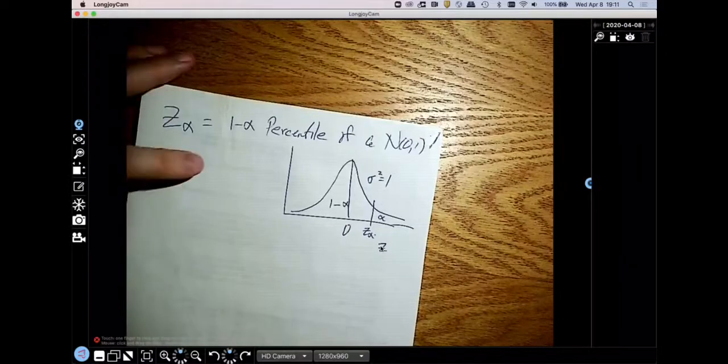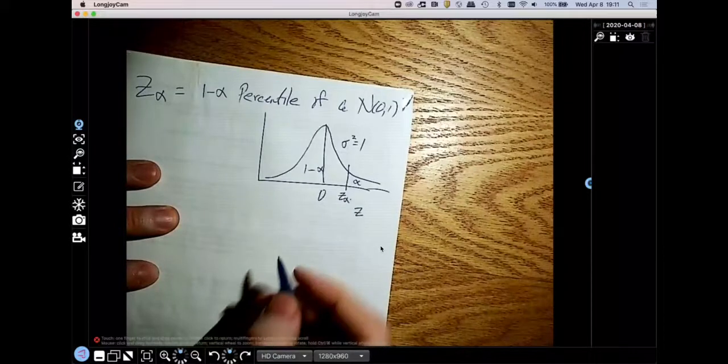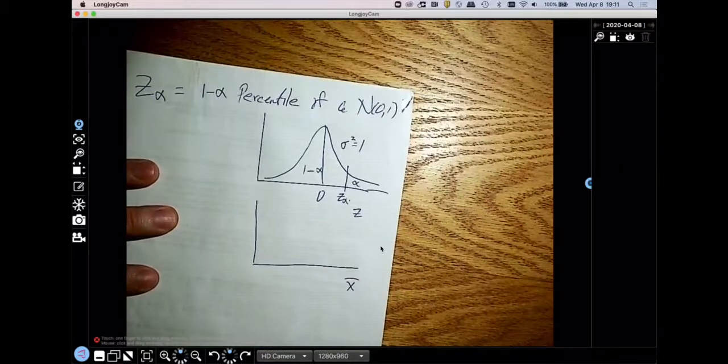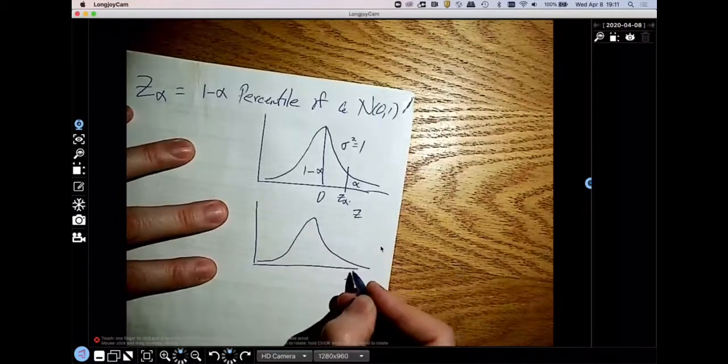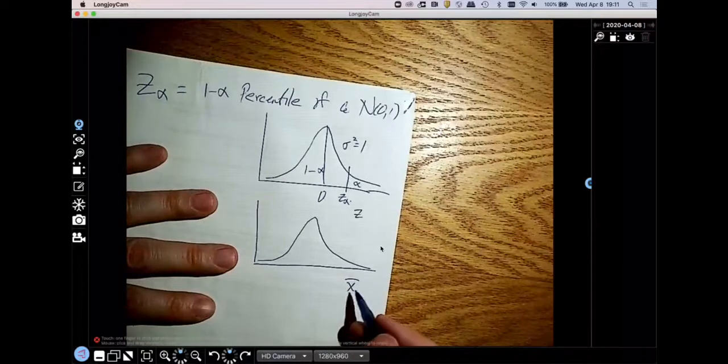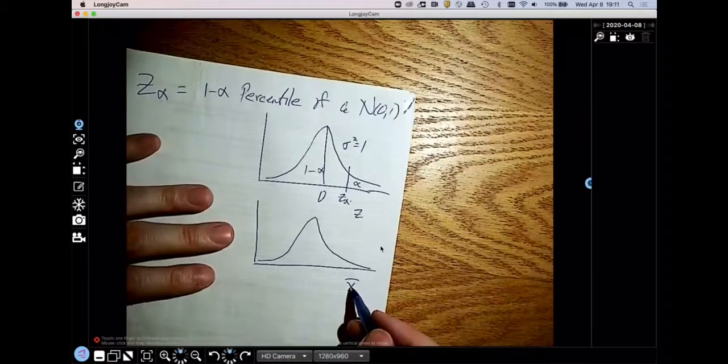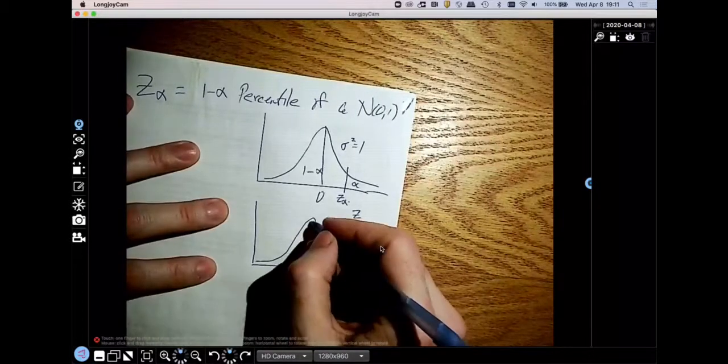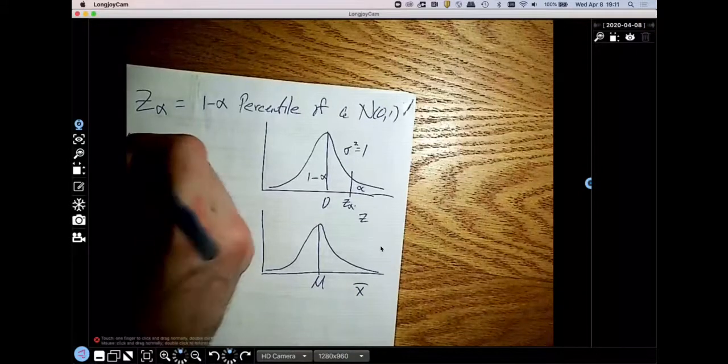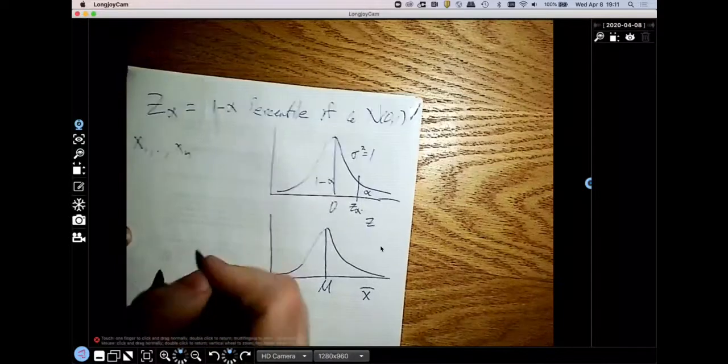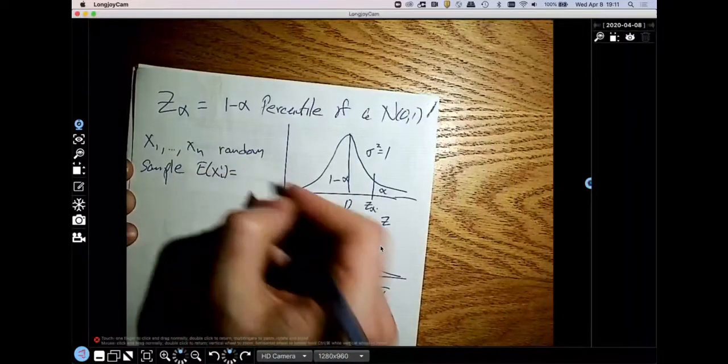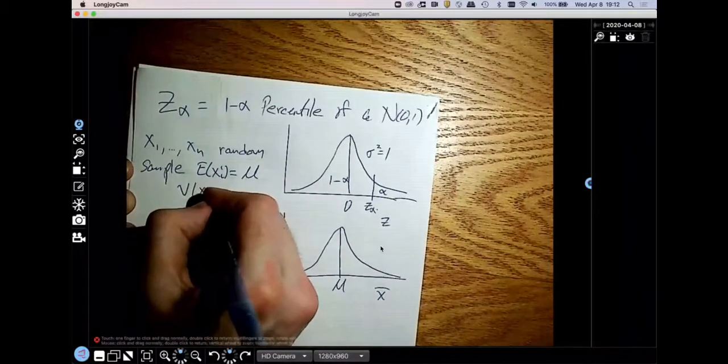So when it comes to a normal two-sided confidence interval, I'm going to draw a probability distribution for X bar. X bar will have a normal distribution if the X's are normal, or even if the X's aren't normal, if our sample size is sufficiently large for the central limit theorem to sufficiently converge, then X bar will still be normal. X1 through Xn is a random sample with the expected value of each one of these observations being mu and the variance being sigma squared.